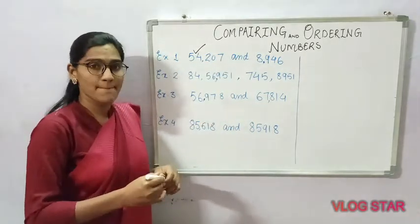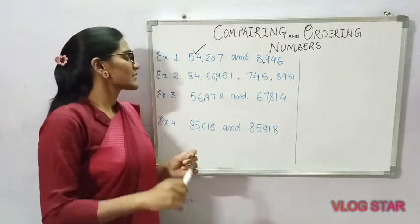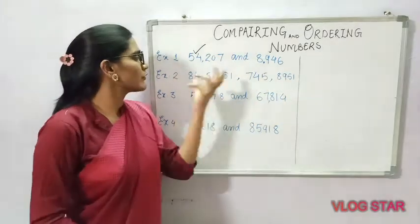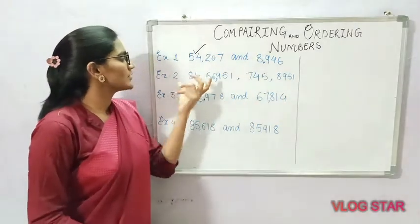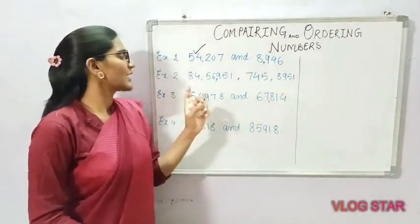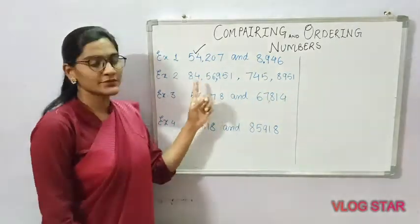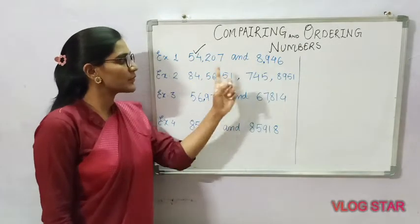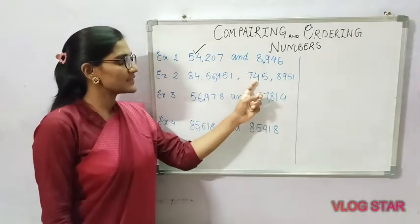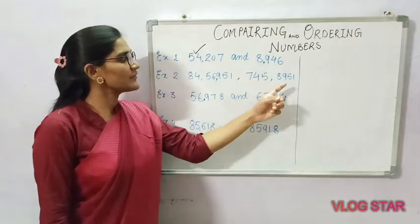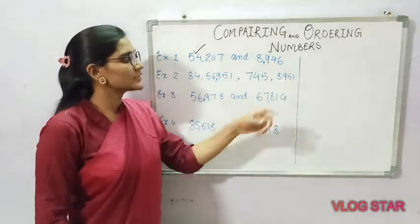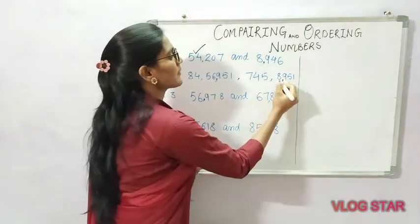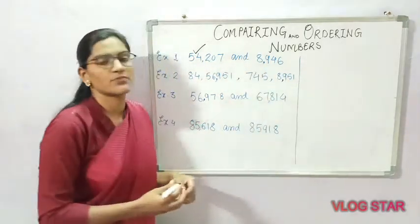Now let's take a second example. In the second example we have four numbers: 84, 56,951, 745, and 8,951.